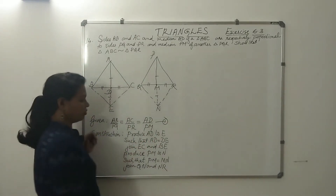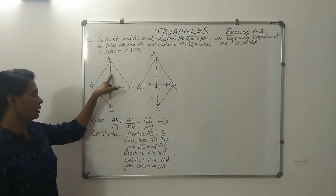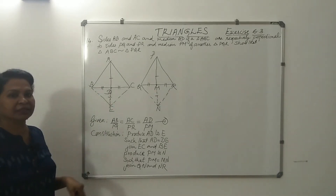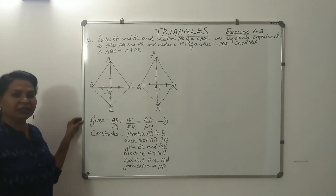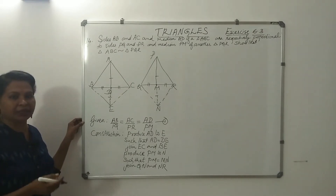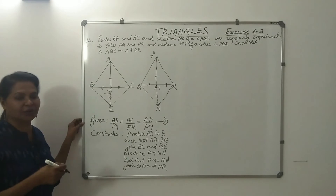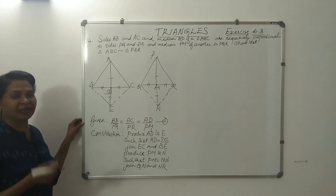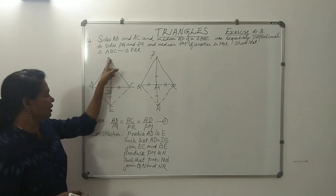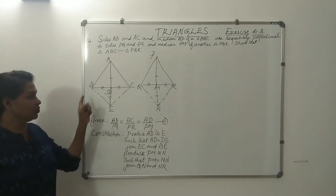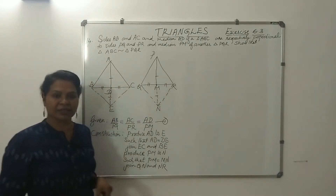Now let's give equation number one. Since BD equal to CD and AD equal to DE by construction, the diagonals bisect each other. Therefore, ABEC is a parallelogram. Similarly, PQNR is a parallelogram.